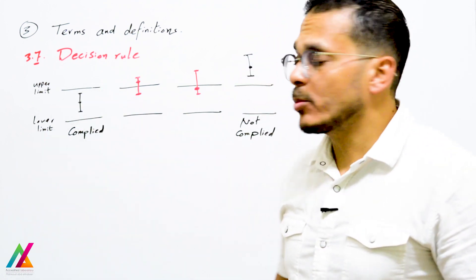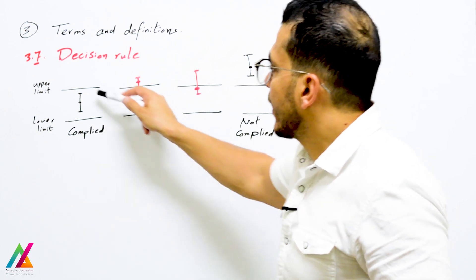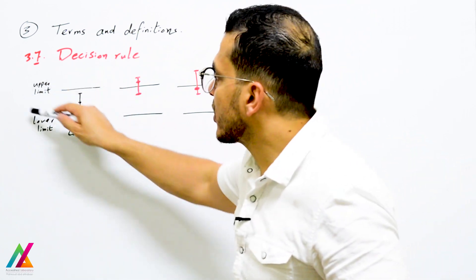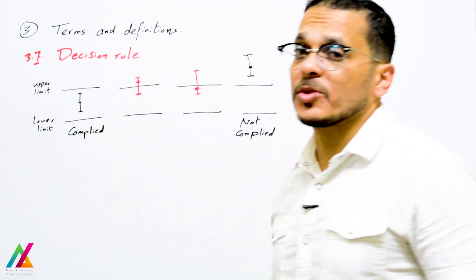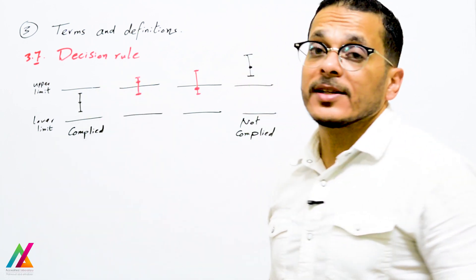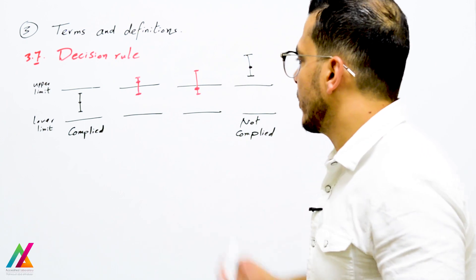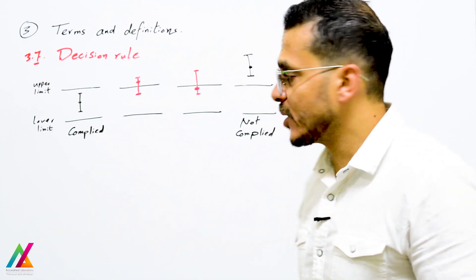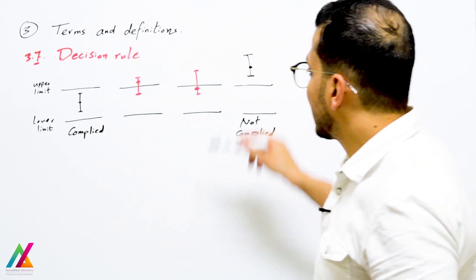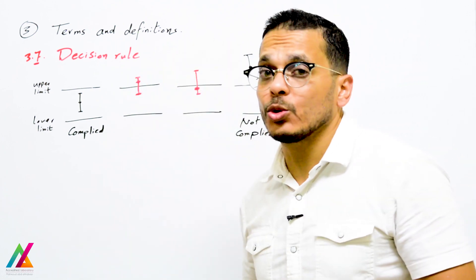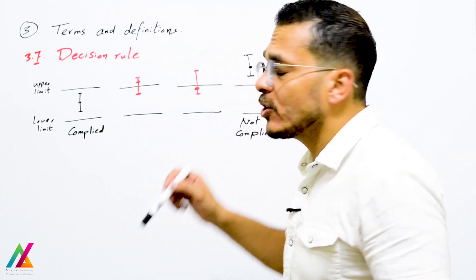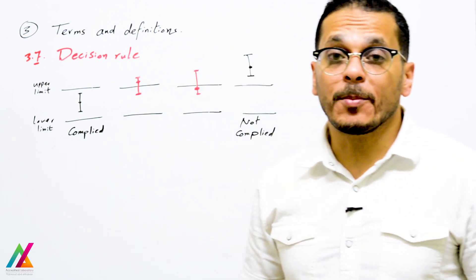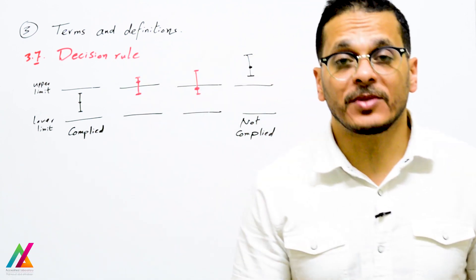This is explained by a graph showing four cases. In the first case, the result plus or minus measurement uncertainty falls entirely inside the specified limits — this clearly complies. In another case, the result plus or minus measurement uncertainty falls entirely outside the limits — clearly non-compliant. However, in two intermediate cases, the uncertainty range straddles the limit, so no firm conclusion can be drawn.